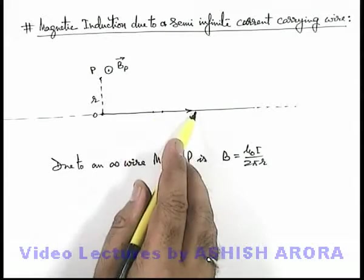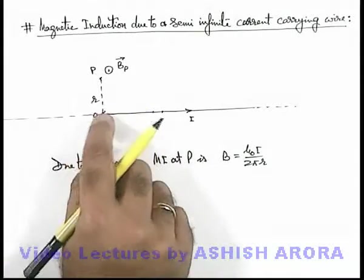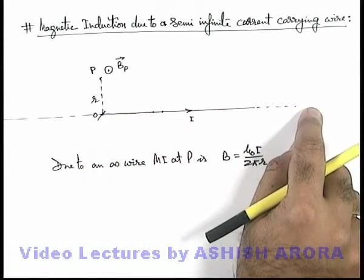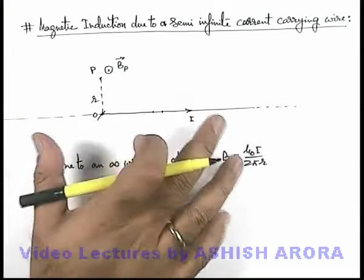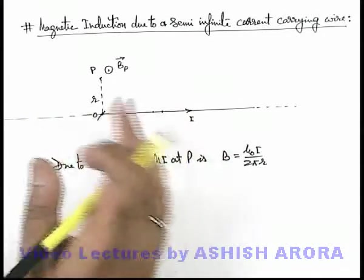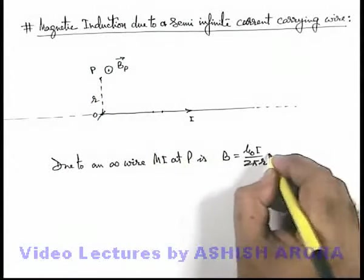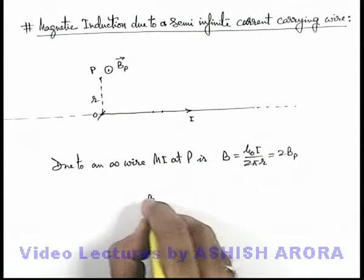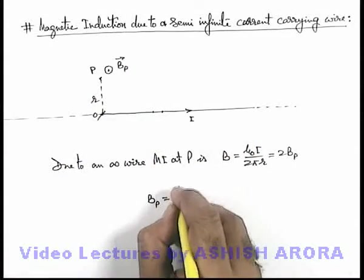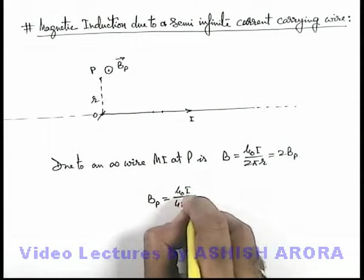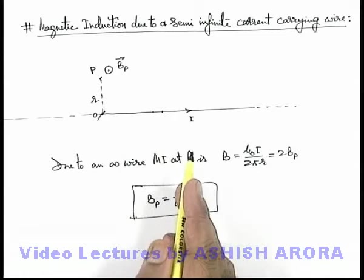And as due to all elements magnetic induction is in the same direction, then whatever magnetic induction will exist at P due to this semi-infinite wire, the same magnetic induction at P will exist due to the other semi-infinite wire which is making it a complete wire. So we can directly write if due to one wire it is B_p, then this B can be written as twice of B_p. So we can write magnetic induction at point P due to this semi-infinite wire as μ₀I by 4πr. That is the result we use and the direction we already obtained by right-hand thumb rule.